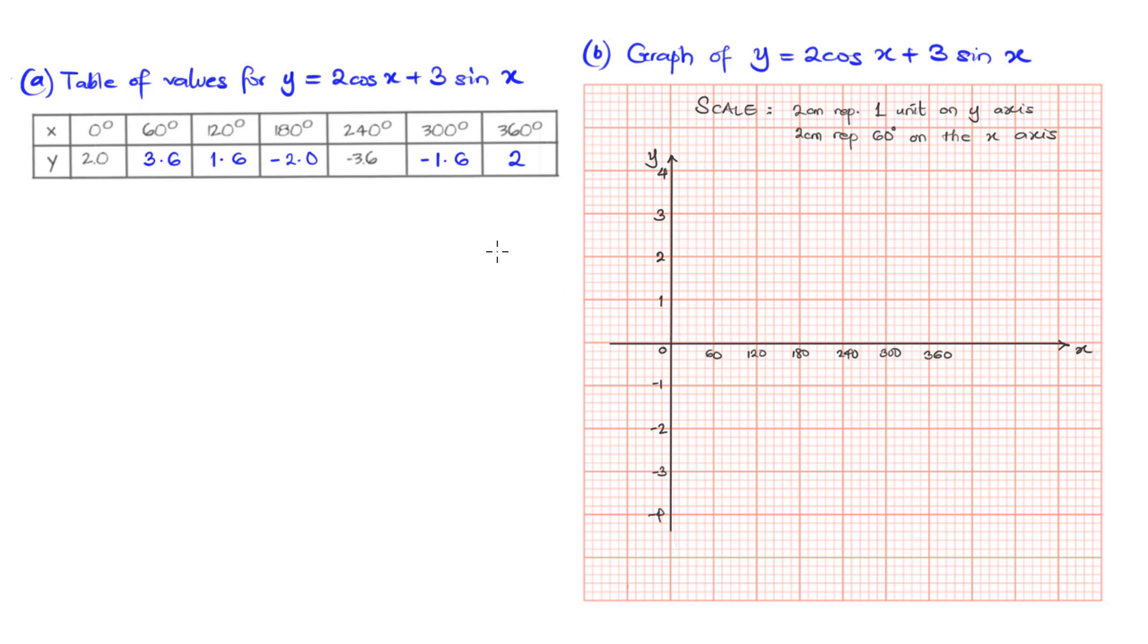Like in the first case, when x is 0, y is 2. So x is 0 degrees, y is 2, as being shown in blue, that's y = 2.